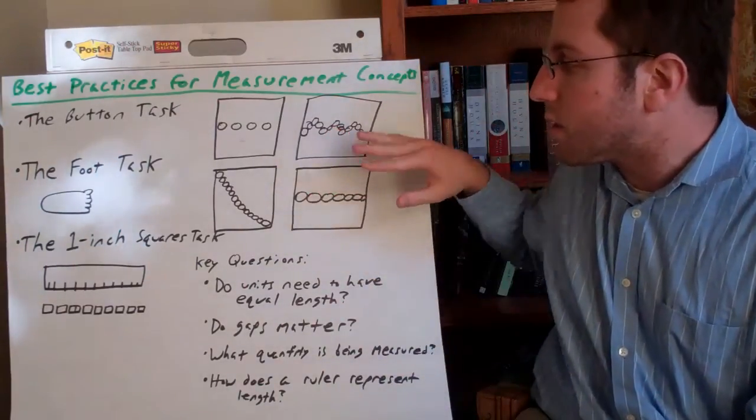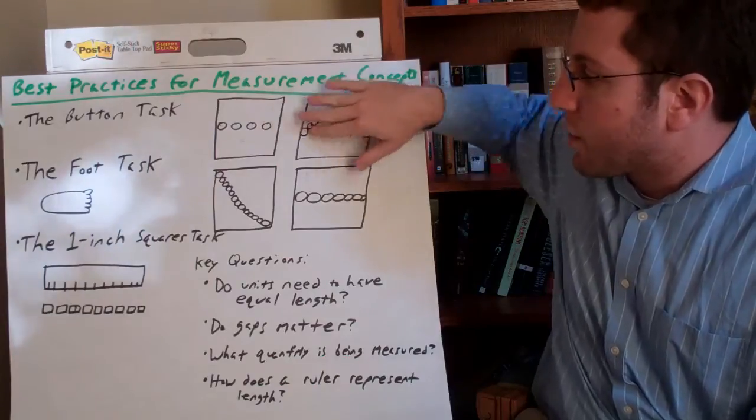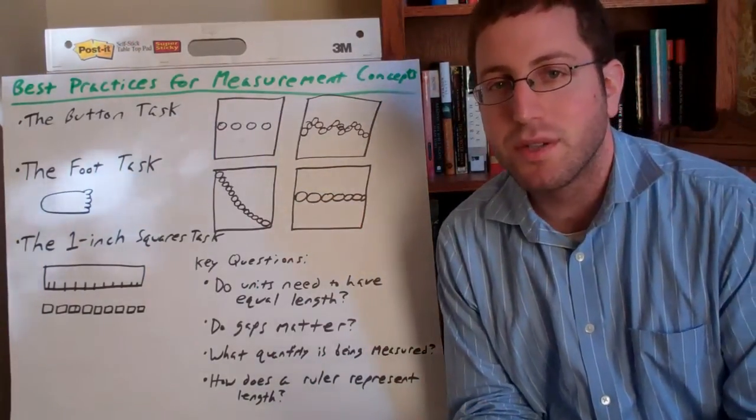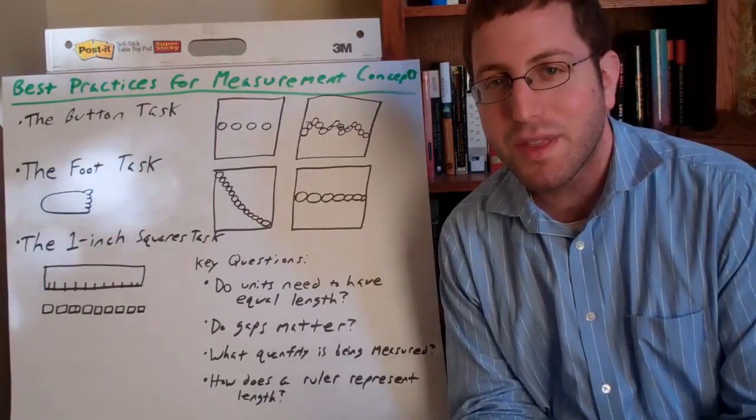So you literally give students sheets of paper that had pictures like these on them. And the hypothetical students should have done a couple of things wrong.